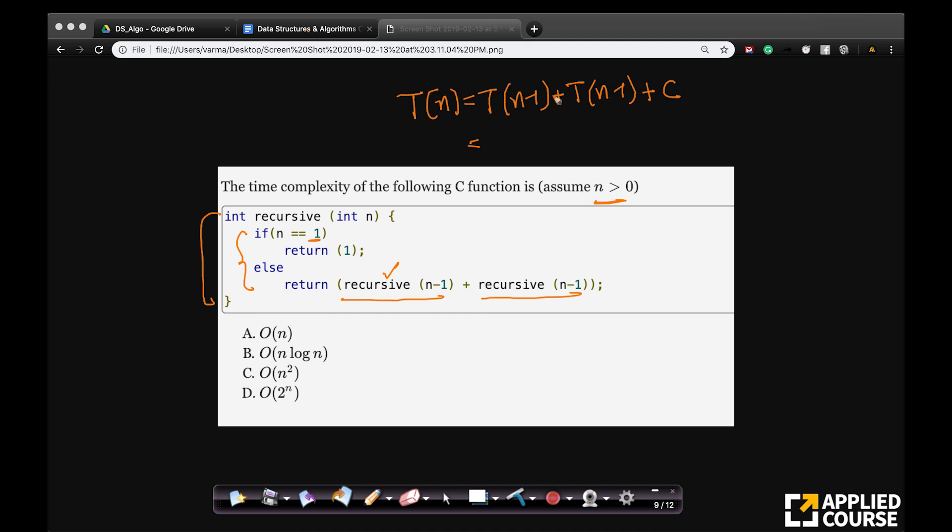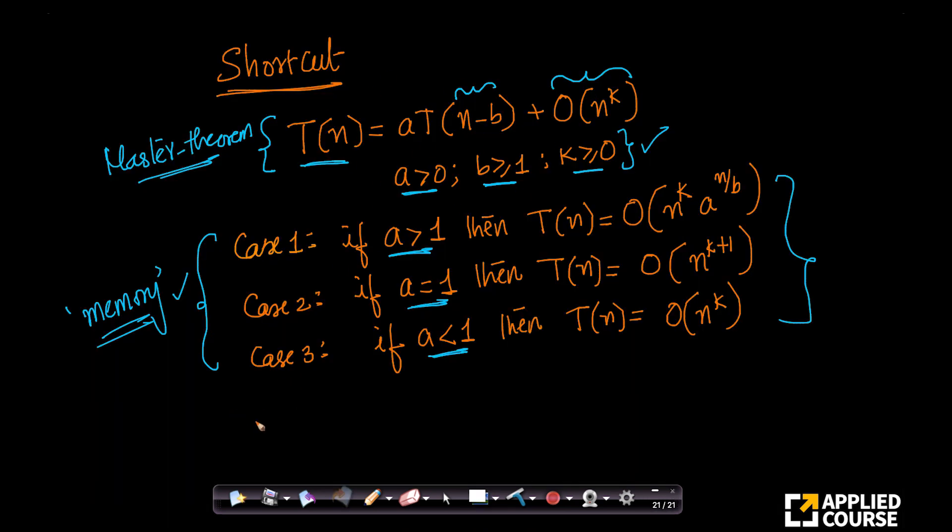Now this can be written as, because these two are the same, I can write it as 2T(n-1) plus C. This is the recurrence relation that I have. Let's just highlight it. If you notice, this is exactly in the form that I want. Look at it. What do I have? Let me just change the color here so that it is easier. So I have T(n) as 2T(n-1) plus some constant.